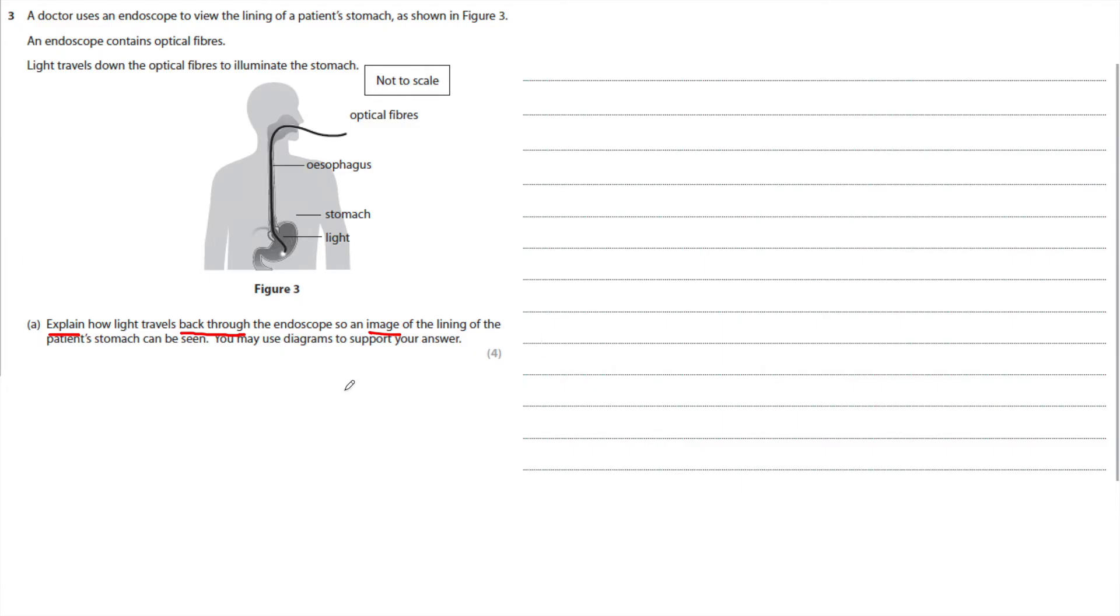Whenever you have total internal reflection, the key things are that it total internally reflects because the angle of incidence is greater than the critical angle. Also, you can talk about the bundles having to be coherent. They have to be parallel and in the same orientation at the bottom and at the top, because each fiber optic acts as one pixel. I would also very quickly sketch a diagram.